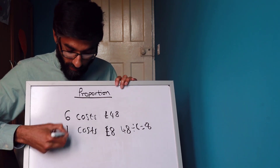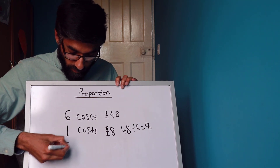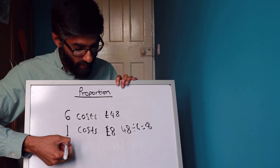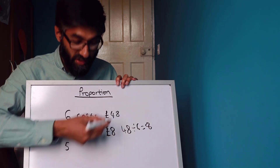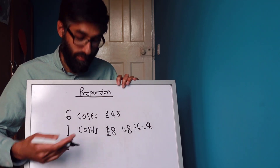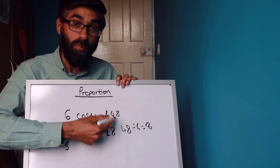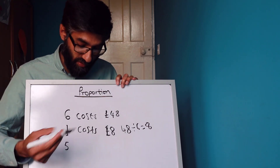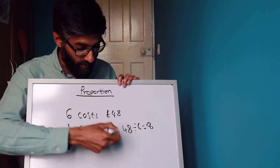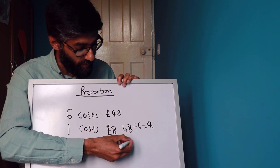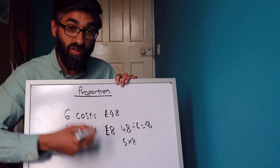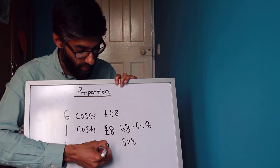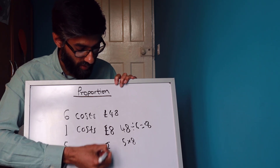How much will five tickets cost? From 48 to five is very difficult to work out directly, so we use the price of one ticket to easily find the price of five. Five times eight gives us the answer, which is 40 pounds.